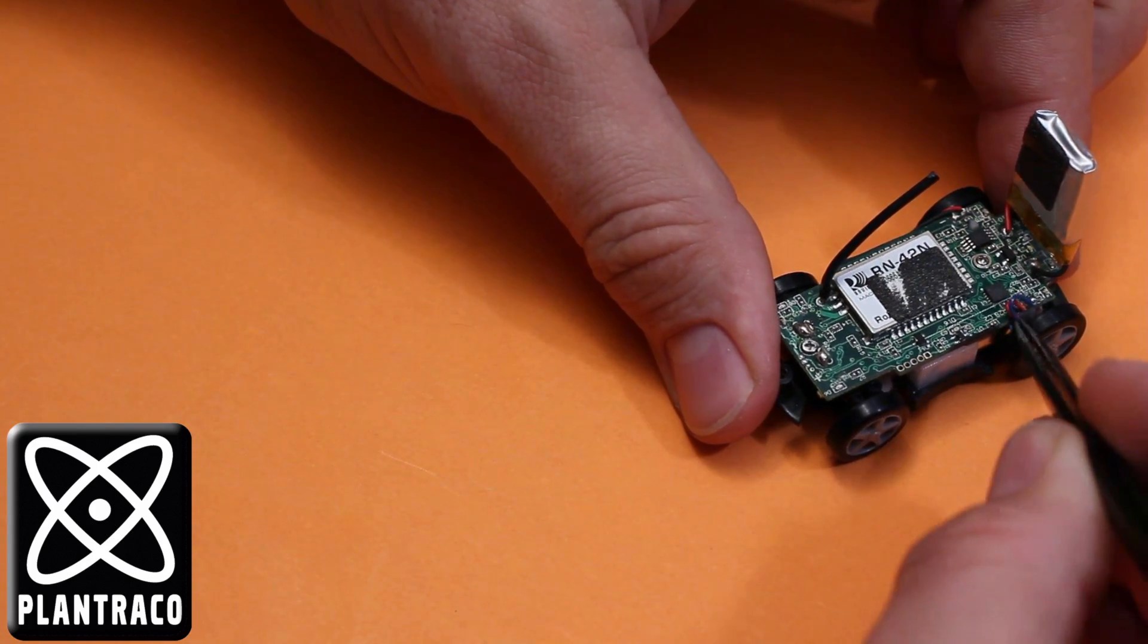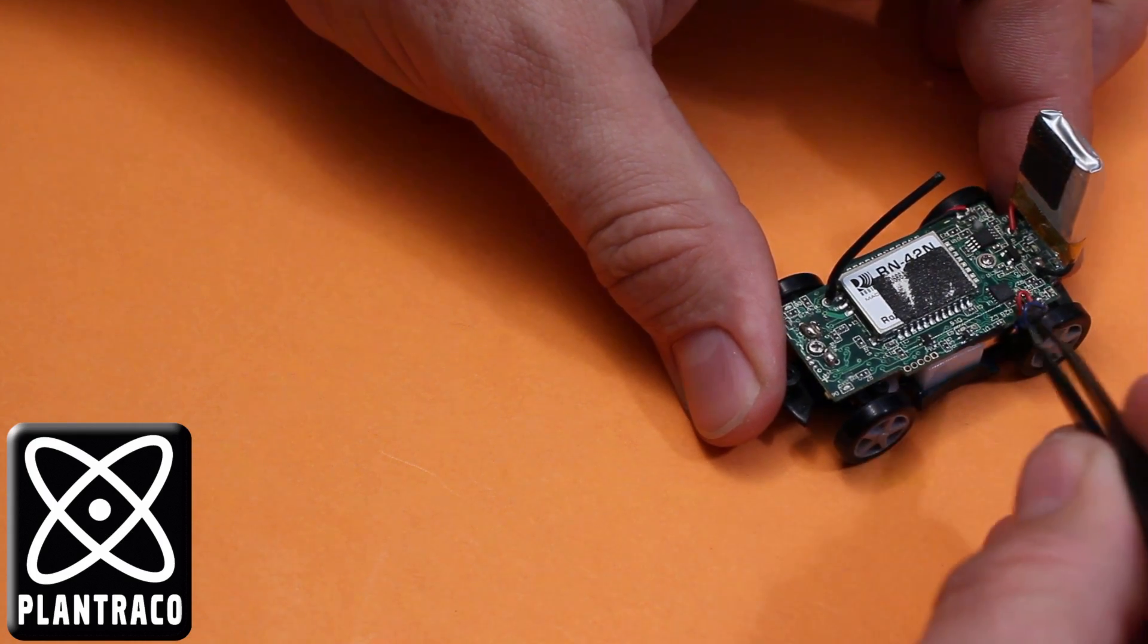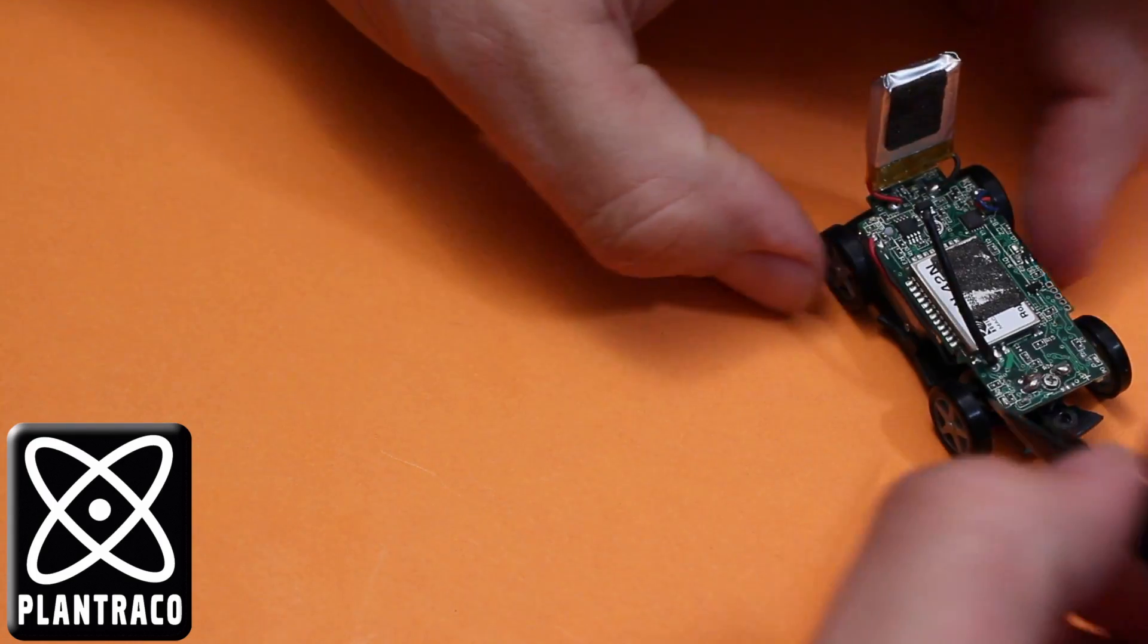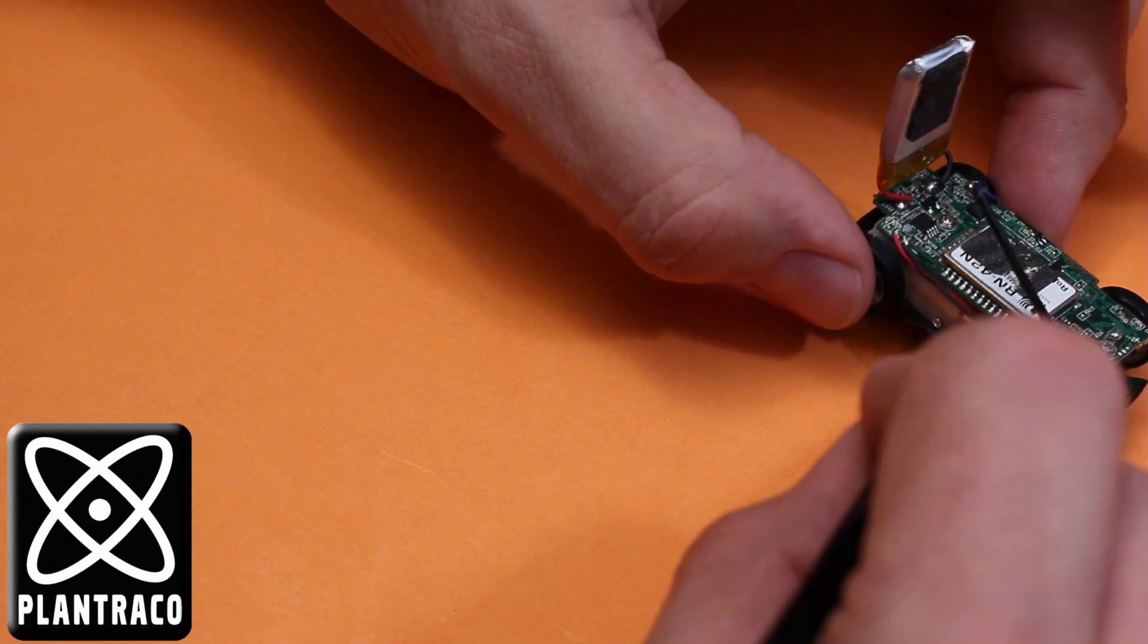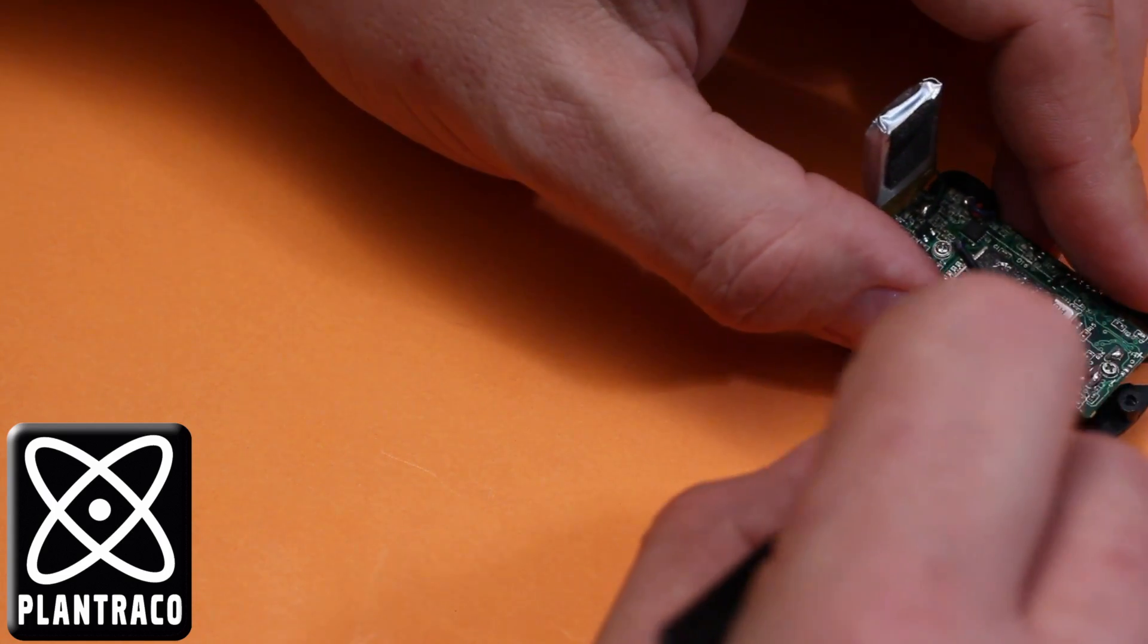Then just line up these wires with the slot in the circuit board. That's just to keep them out of the way of the tires. And these two wires fit in that slot there as well.